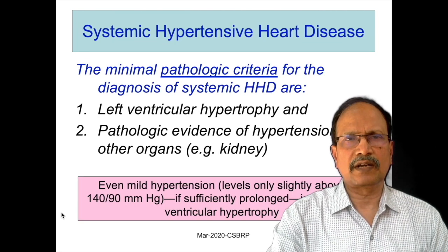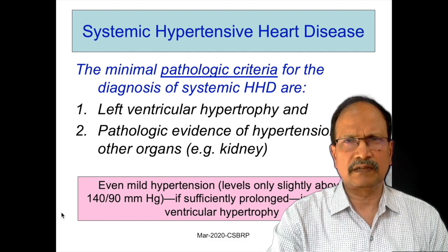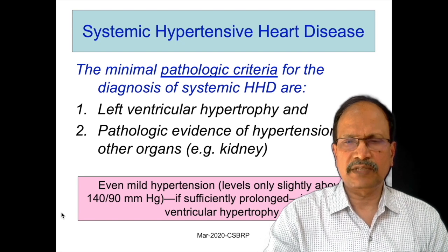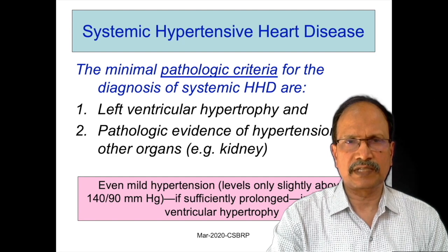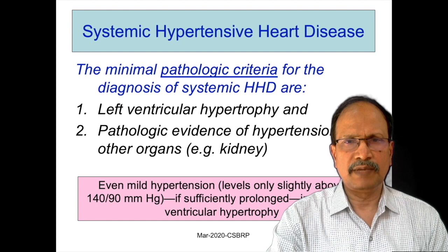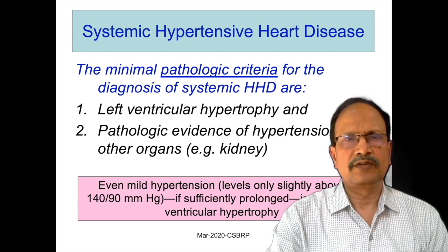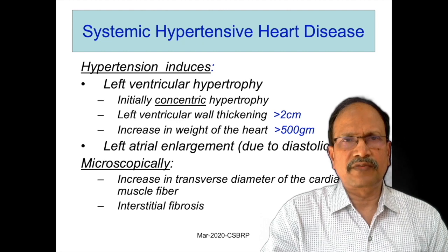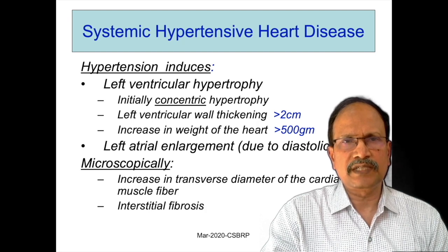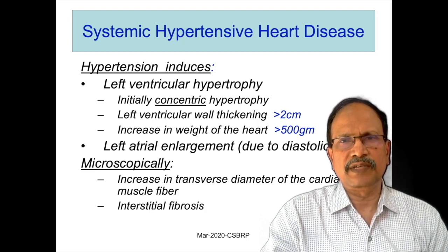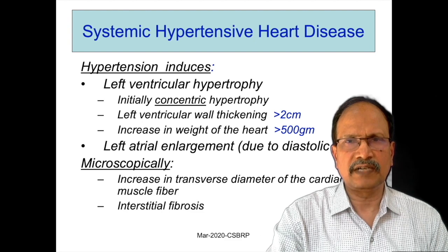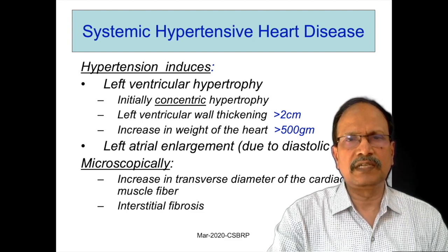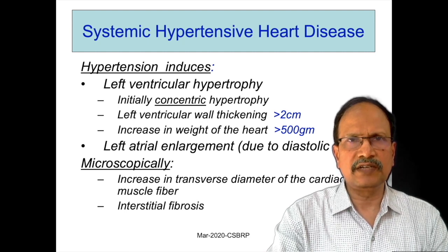The minimal pathological criteria required to diagnose systemic hypertensive heart disease are left ventricular hypertrophy and pathological evidence of hypertension in other organs, especially the kidney. Even mild hypertension over a longer time may be associated with left ventricular hypertrophy. Hypertension induces left ventricular hypertrophy; initially it is concentric hypertrophy. Left ventricular wall thickening may be more than 2 centimeters, and heart weight may be more than 500 grams. There may also be left atrial enlargement due to defective diastolic function, and microscopically you will see increased transverse diameter of cardiac muscle fibers and interstitial fibrosis.